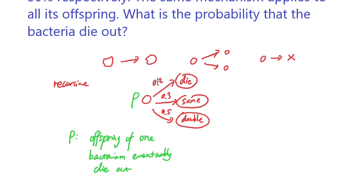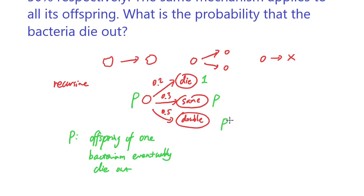After a 20% transition it doesn't produce any offspring, so it's going to die for sure — that contributes probability 1. After a 30% transition it produces one offspring, maintaining the same population, so there's still one bacterium left and the probability of that dying out is again p. Finally, when you have two bacteria remaining, the probability that they both die out — if the probability of one bacterium dying out is p — would be p squared.